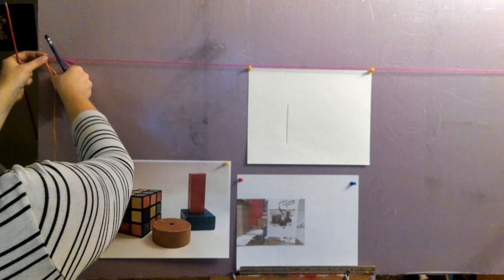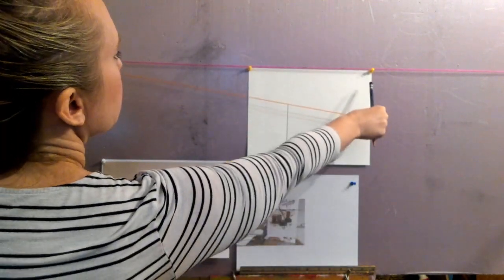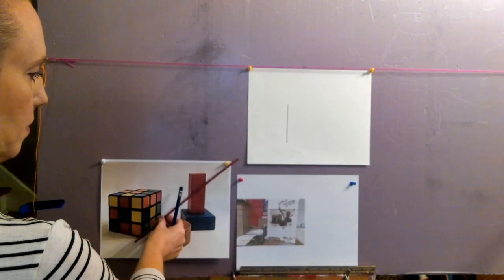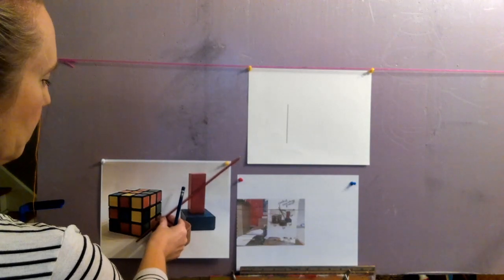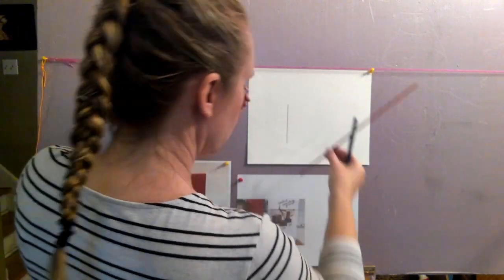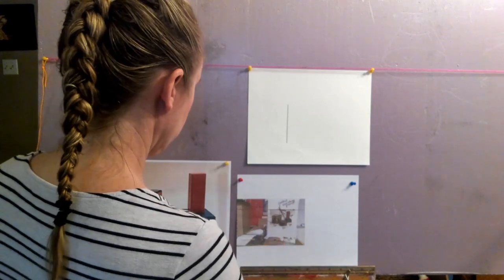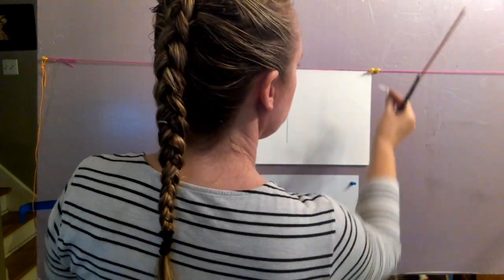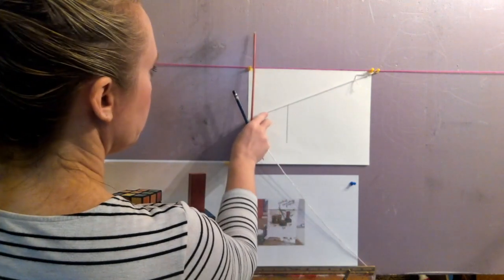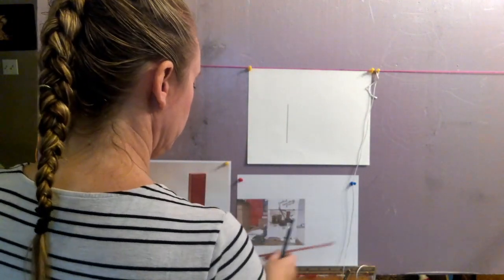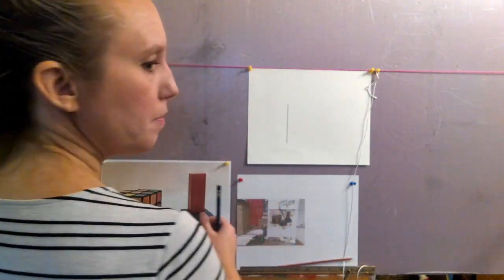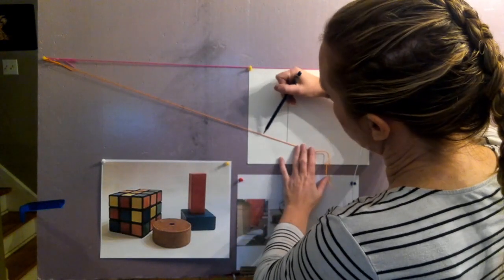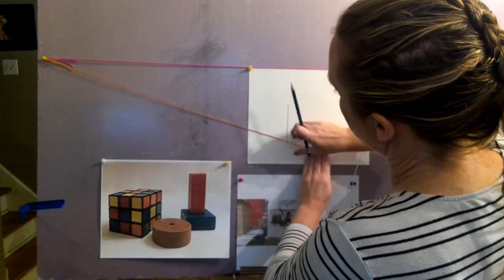You find the eye level by figuring out where two of the vanishing points cross. The one-point boxes will cross right in the center of that, right in the center of the page. The two-point boxes, you're going to use your sighting stick to find the angle and figure out where it crosses that eye level.